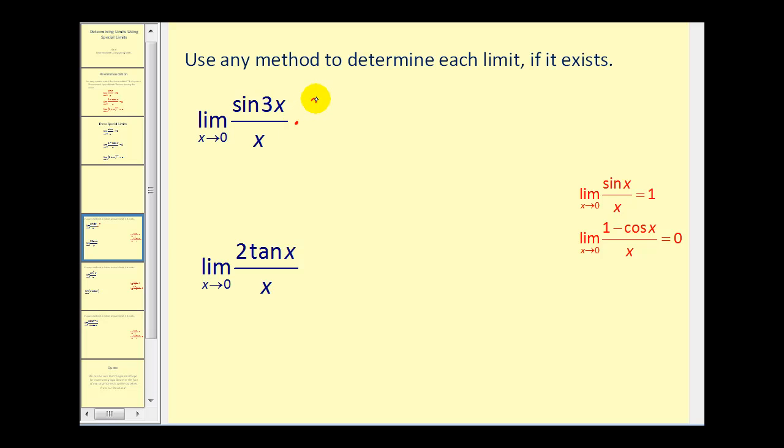If we multiply the numerator and denominator by three, we would have the limit as x approaches zero of 3·sin(3x) divided by 3x. Since as x approaches zero, 3x also approaches zero, it does fit the form of this special limit. We can rewrite this as three times the limit as x approaches zero of sin(3x) divided by 3x.